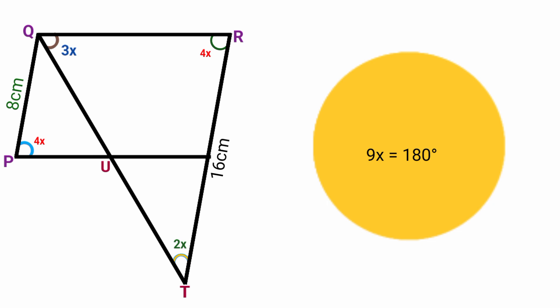Making x the subject of the formula, we divide both sides by 9. Here 9 cancels 9, and here 180 degrees divided by 9 is 20 degrees. So x equals 20 degrees.